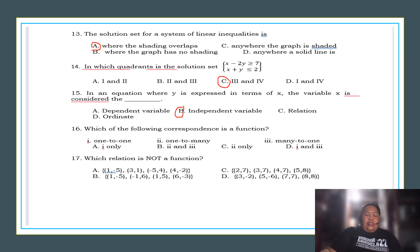Number 16. Which of the following correspondences is a function? We have here 1 to 1, 1 to many, many to 1. Of course, our correct answer is letter D. So, 1 to 1 and many to 1 is a function.